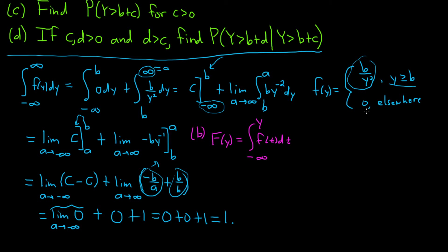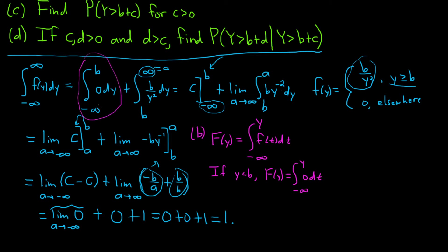For the case where y is less than b: F of y equals the integral from negative infinity to y of zero dt. Since y is less than b, the integrand is zero throughout, and integrating zero gives zero.